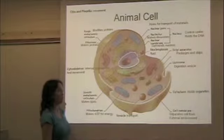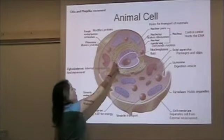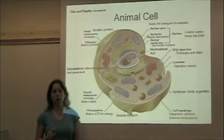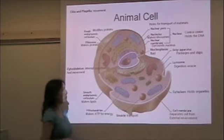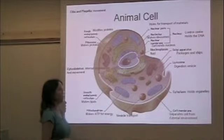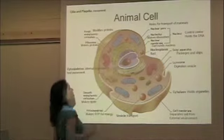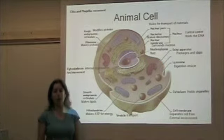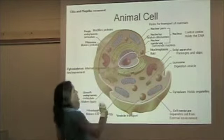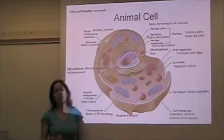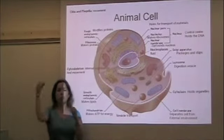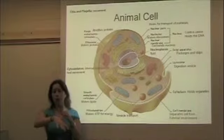The nucleus is important — it holds the DNA. Directly attached to the nucleus is the rough ER. It's called rough because it looks rough under the microscope. ER stands for endoplasmic reticulum. The rough ER's job is to modify proteins, and the reason it looks rough is because it has lots and lots of ribosomes on its external surface. The ribosomes make the proteins, then the proteins go directly into the rough ER where they're modified.